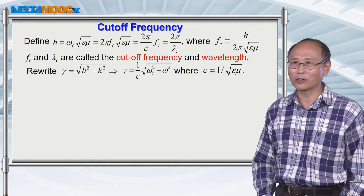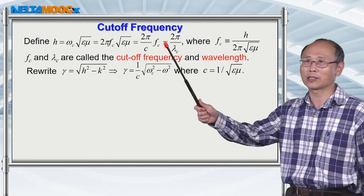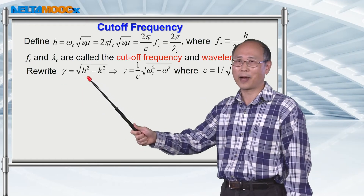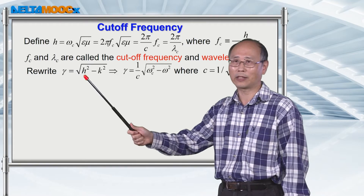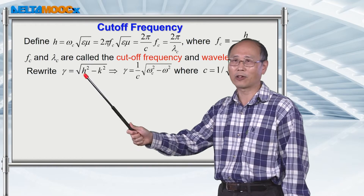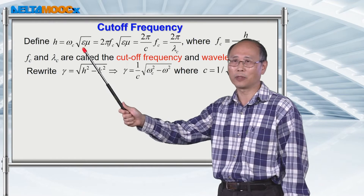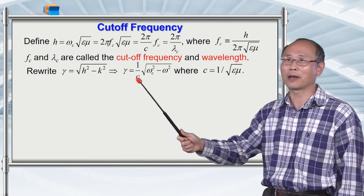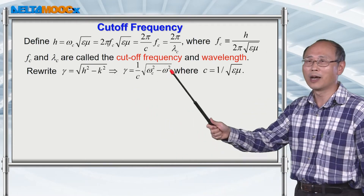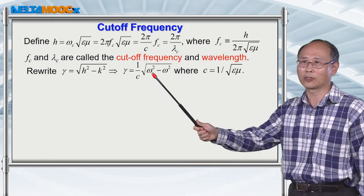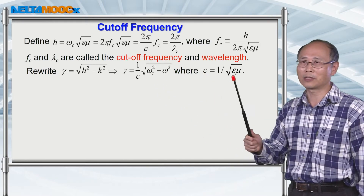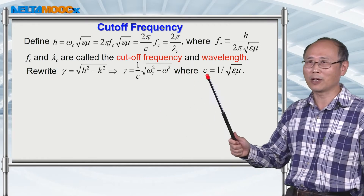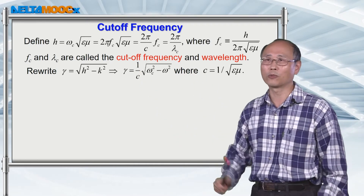Let's continue the discussion using the cutoff frequency concept. Gamma is described by this expression where h is the eigenvalue. Now we redefine h using this expression, so gamma becomes a function of the radiation frequency and also the cutoff frequency. And 1 over the square root of epsilon mu equals the speed of radiation given by this pre-factor 1 over c. Now we can start to vary the frequency of the radiation.